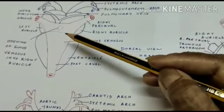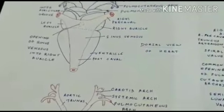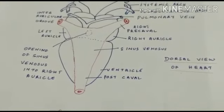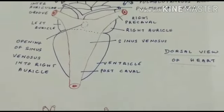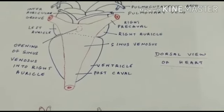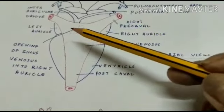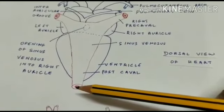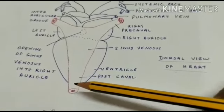Internally, between the right and the left auricle, an inter-auricular septum is present. On the dorsal side of the heart, a triangular structure which is the sinus venosus is present. The sinus venosus receives the deoxygenated blood from various parts of the body. It has two pre-cavals or the superior vena cava, which collect blood from the anterior parts of the body, and one single post-caval or the inferior vena cava, which gets blood from the hind parts of the body.